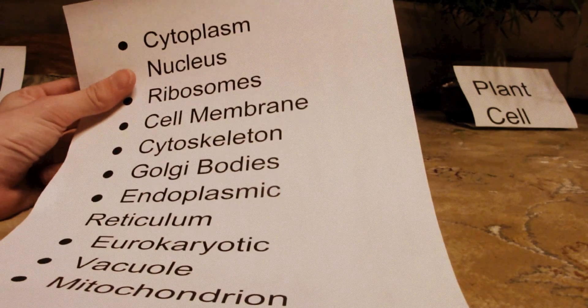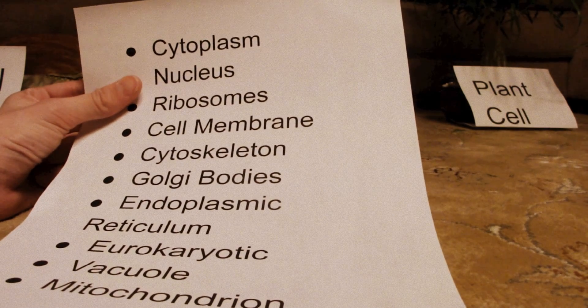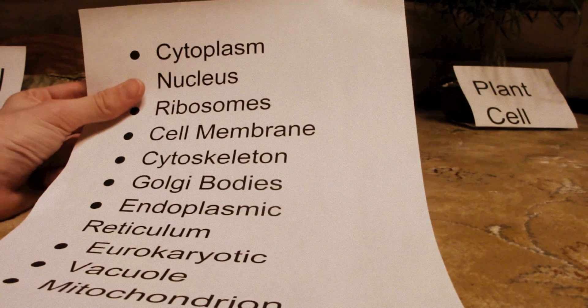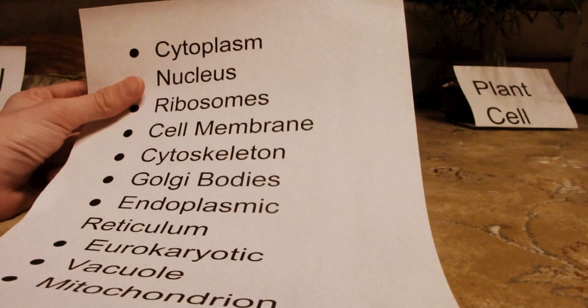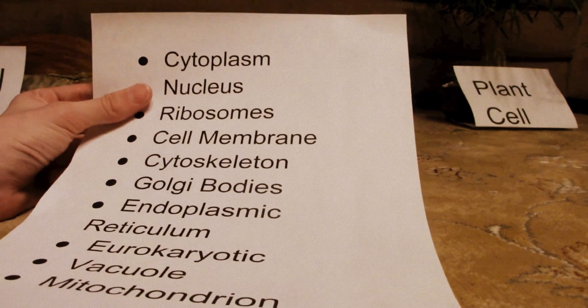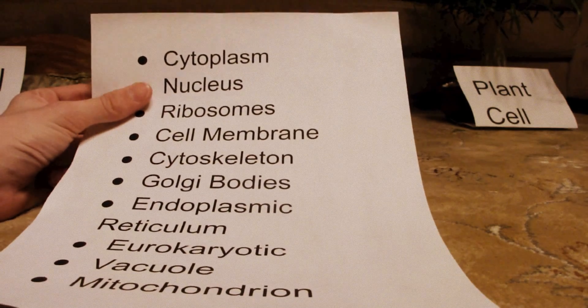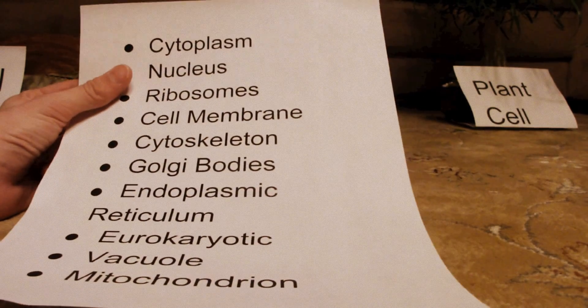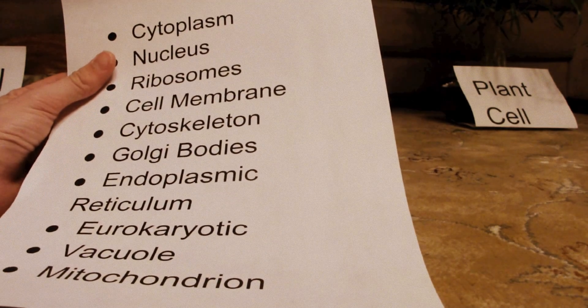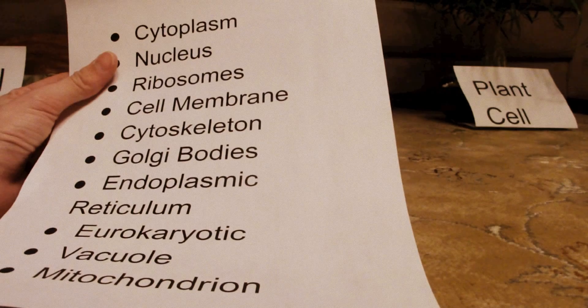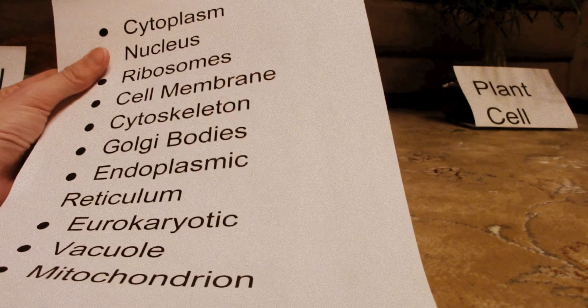They are both eukaryotic cells — that is, cells with membrane-bound organelles. They both have vacuoles, which hold water and food, and they both have mitochondria, which convert glucose to ATP.